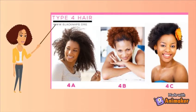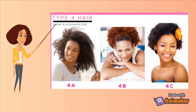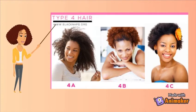Type 4b hair takes on a Z shape. Then we have Type 4c hair, which Andre Walker also does not include in his hair typing chart. It's strange that he didn't, because Type 4c hair stands out so much and so many people have this hair type. Type 4c hair is so tightly coiled that it takes on a zigzag shape.